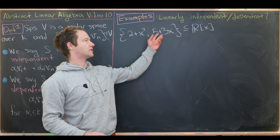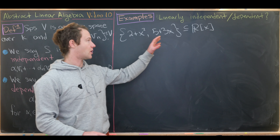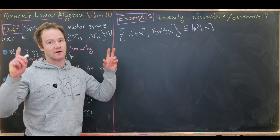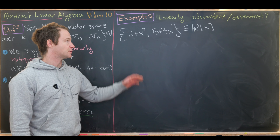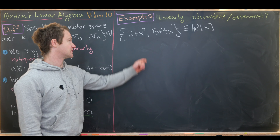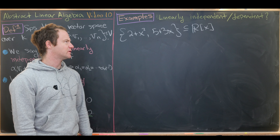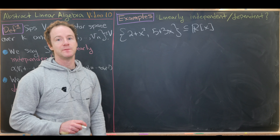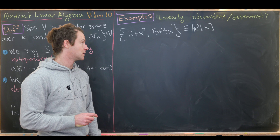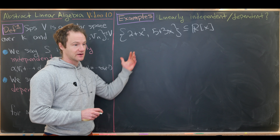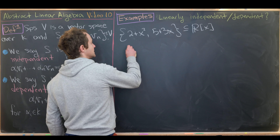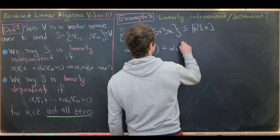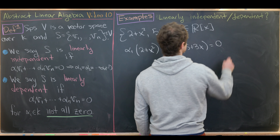For the next example, we have two polynomials in R[x]. Since x is the variable for our polynomials, we use alpha_1 and alpha_2 as coefficients. We set alpha_1·(2 + x²) + alpha_2·(5 + 3x) = 0, where 0 is the zero polynomial.